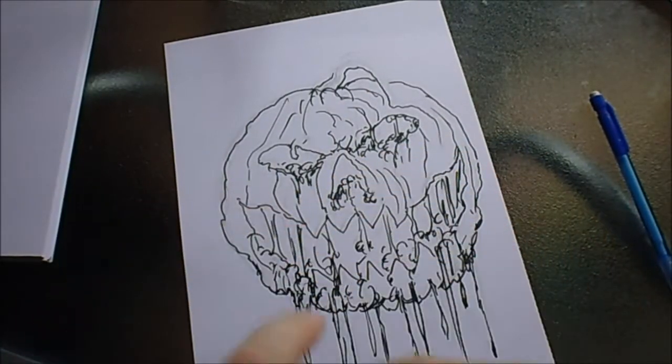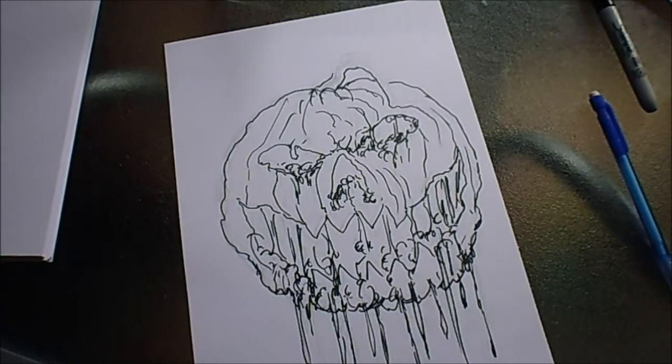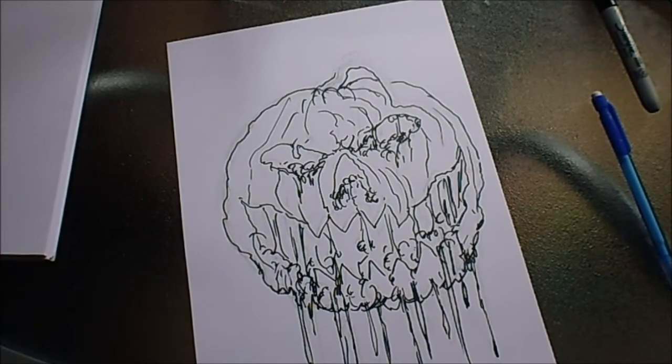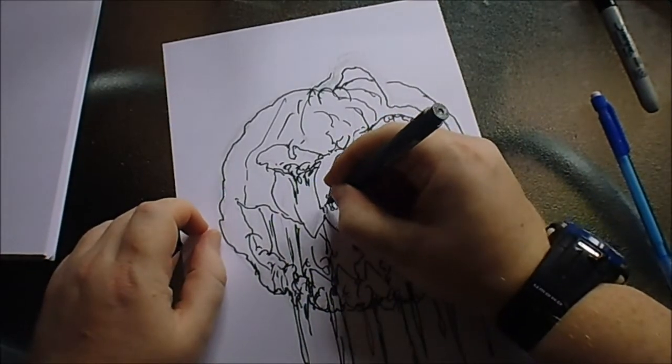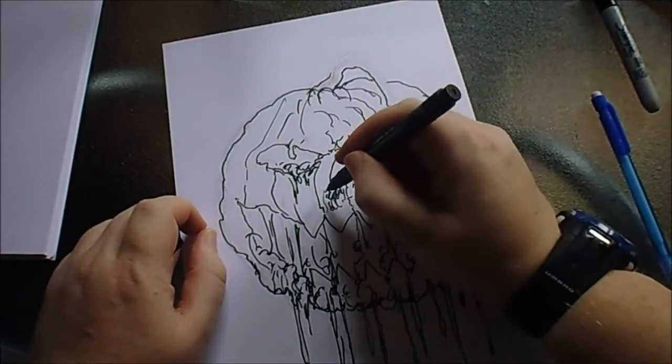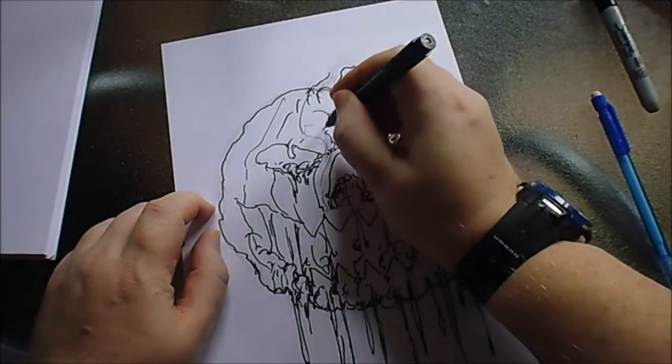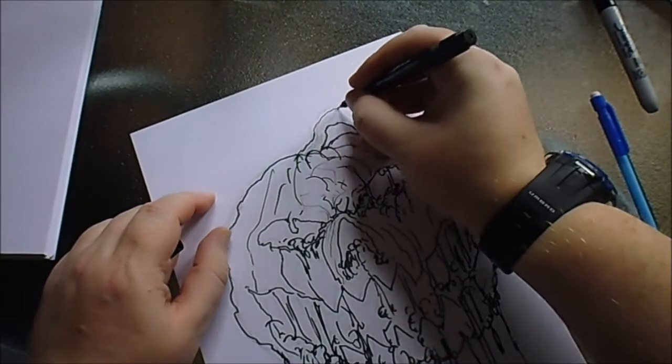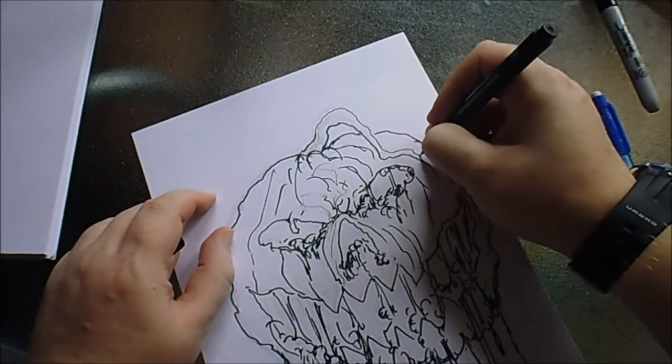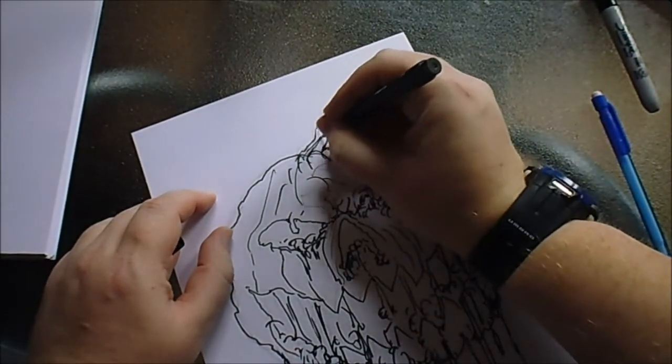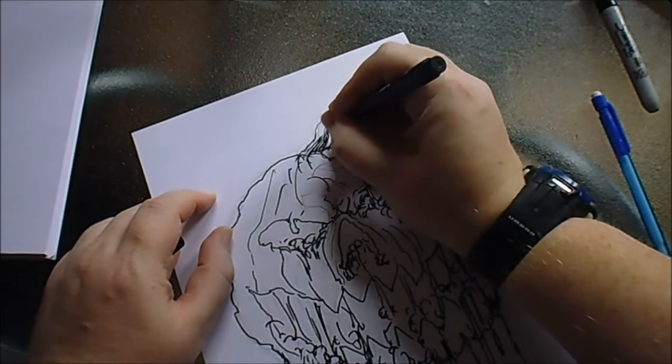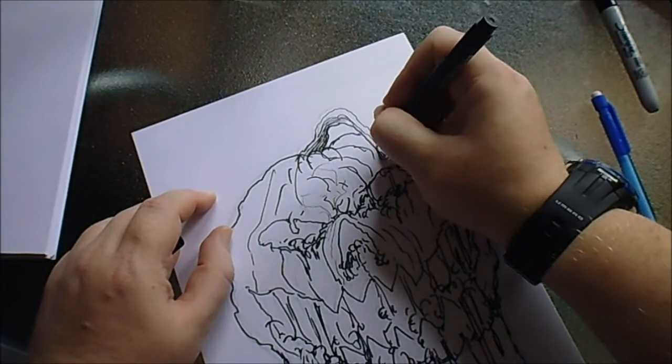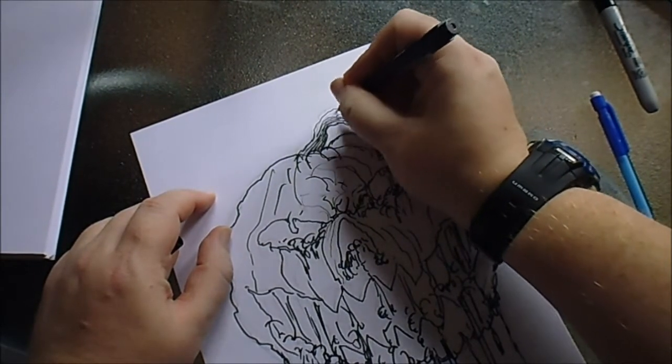So I'll use a thinner ink pen now. There we go, I'm using a 0.8 Unipin just for some thinner lines, especially on that stem as well. So the stem's sort of shriveled up.